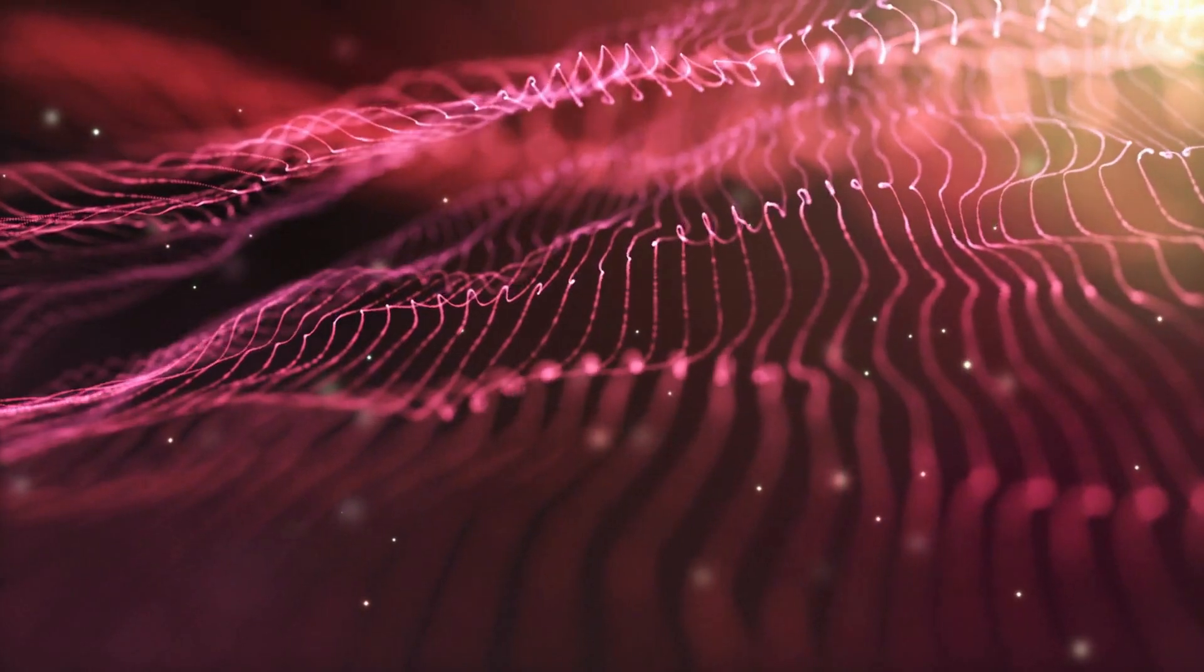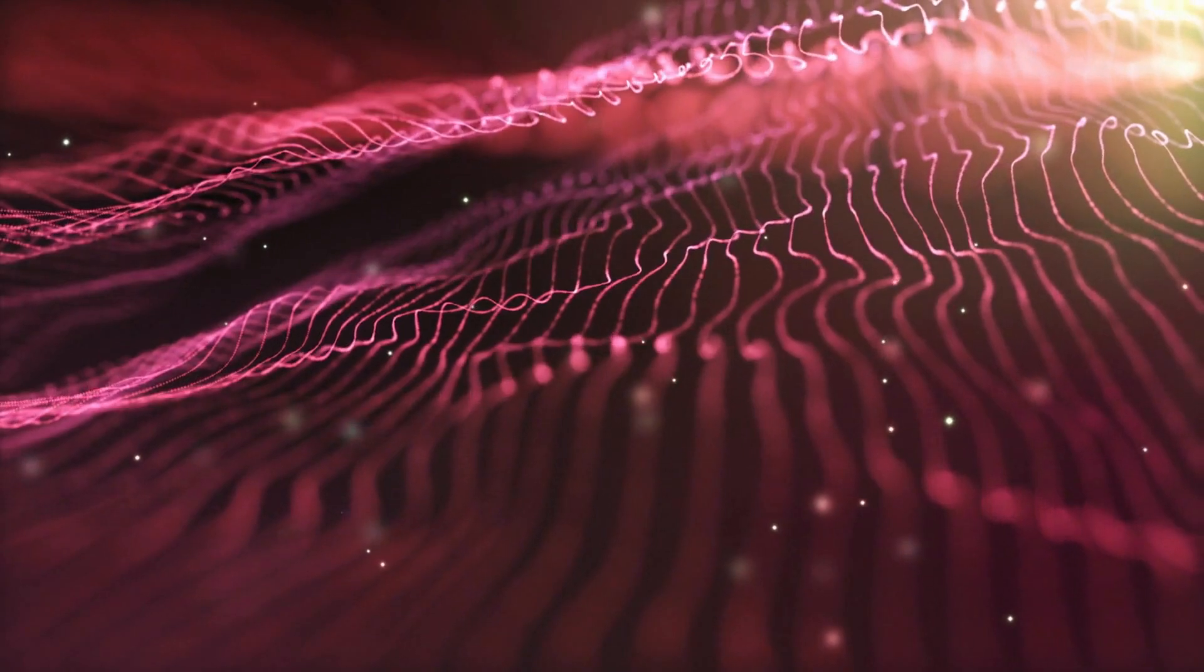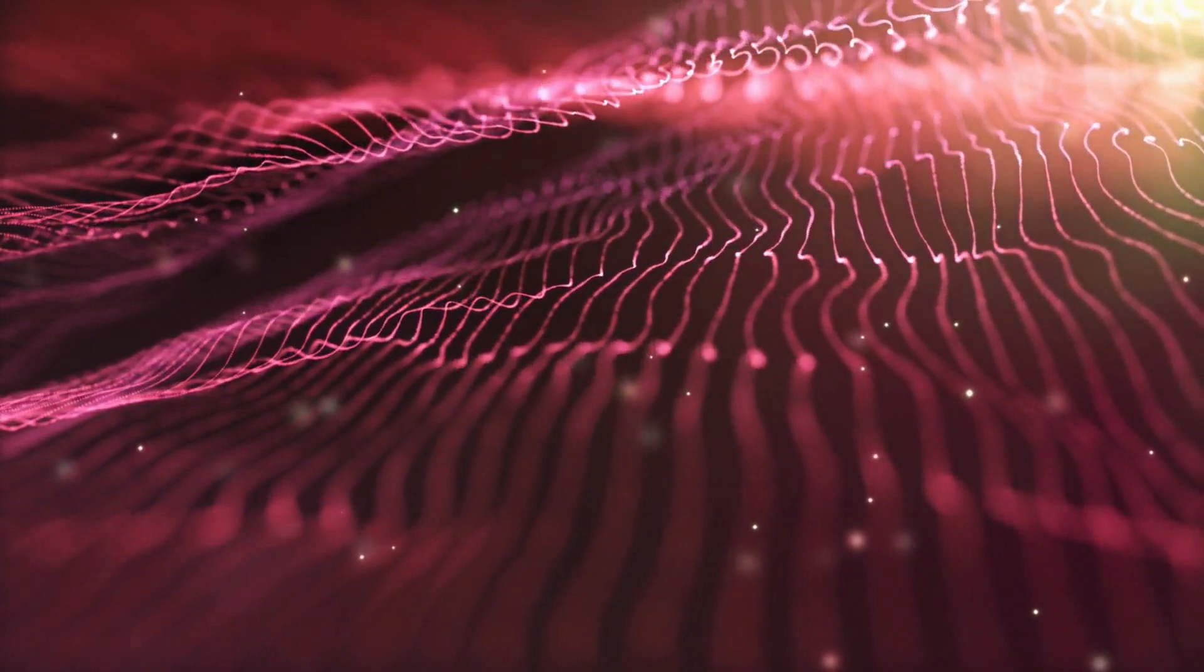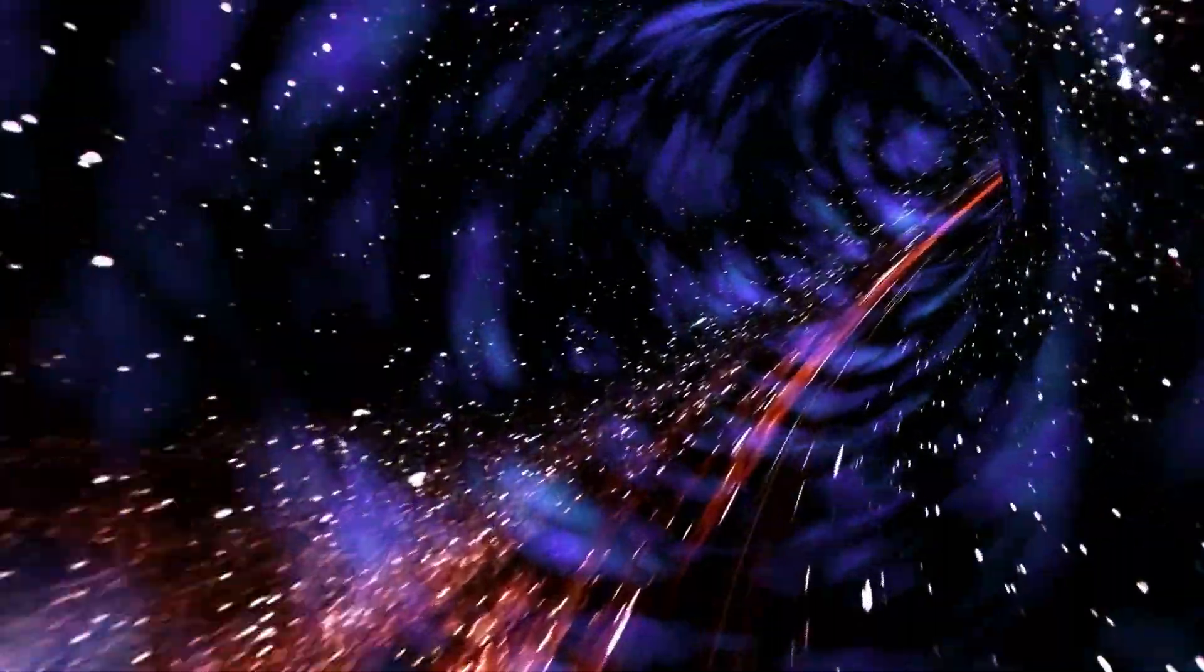When matter falls into a black hole, these strings are believed to absorb information about the matter and encode it in their vibrations. This means that the properties of the matter that falls into a black hole are somehow preserved in the vibrations of the strings surrounding the black hole.